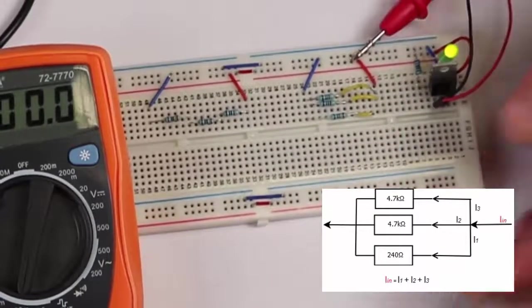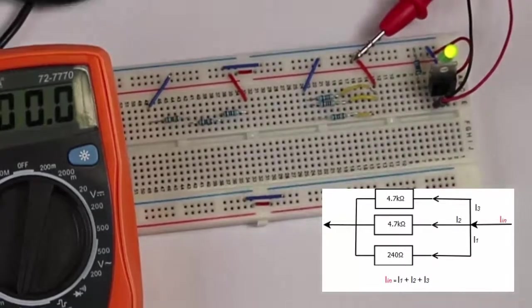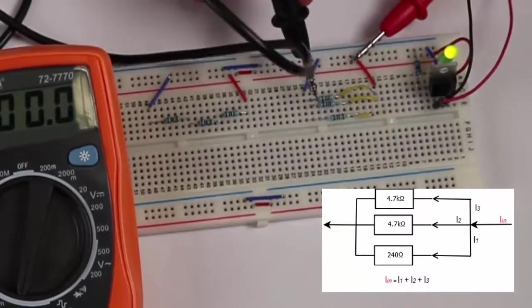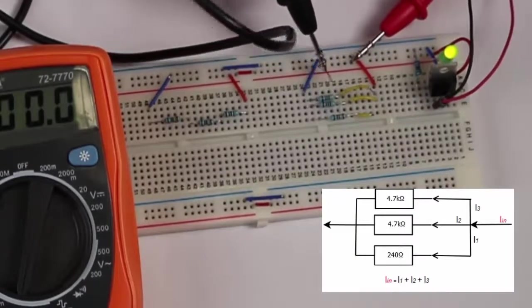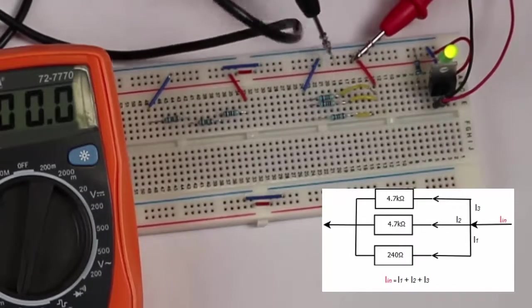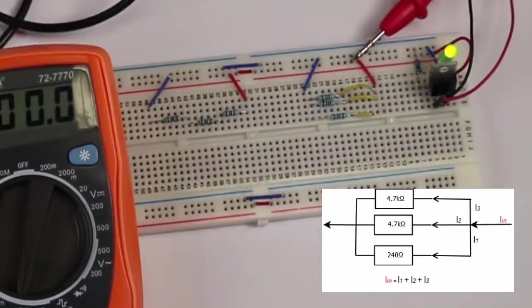So we have 22.2mA flowing in here and we have 20mA flowing through the 240 and about 1mA through each of these here. So we can see the current flowing into the point equals the current flowing out. And that's a test of Kirchhoff's current law.